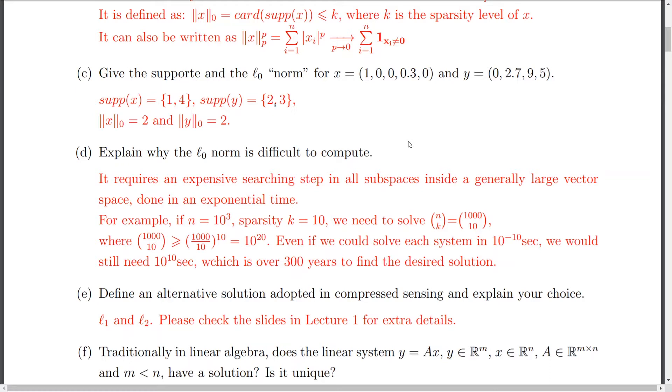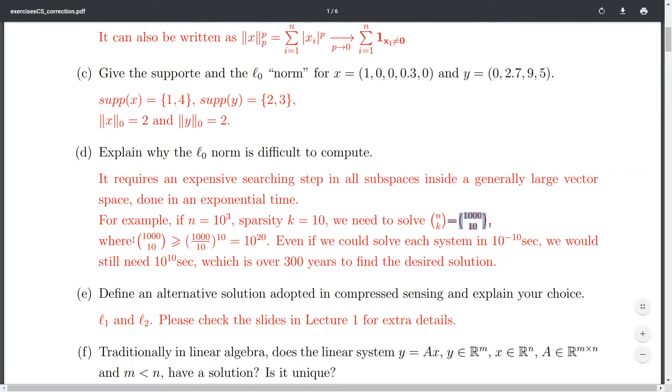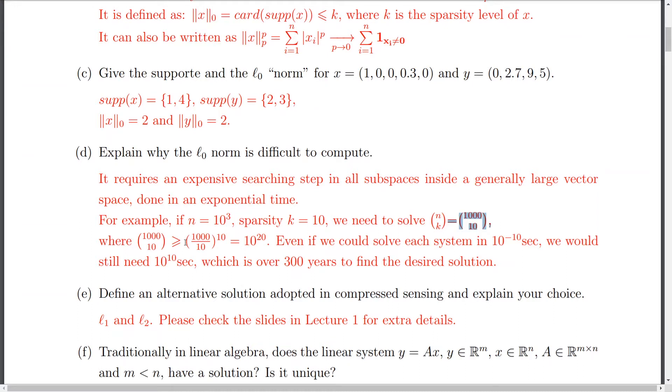So, if I would like to do this L0 norm, then it will be done in an exponential time. And for example, if my vector space is of a size 1000 and with a sparsity just 10, then we would need to solve the binom of n and k, as you see here. And actually, mathematically speaking, we can, it is proved that the binom of n k usually is larger or equal than the fraction of n over k power k. Here we have 10 power 20. So, if we just stop there at 10 power 20, and even if we could solve each of these systems like individual systems in a time of 10 power minus 10 seconds, then we could still, we would still need 10 power 10 seconds, which is over 300 years to find the desired solution.